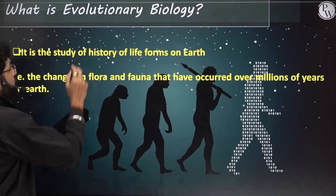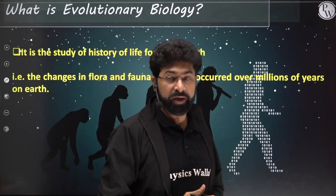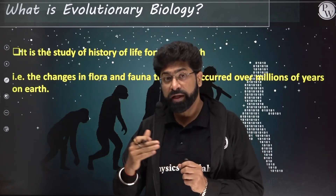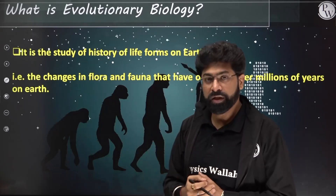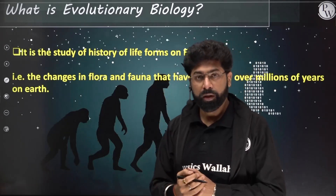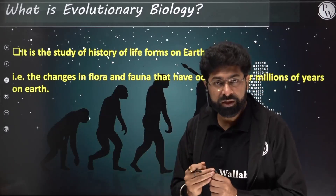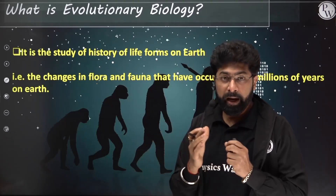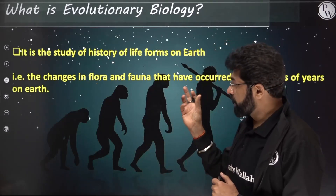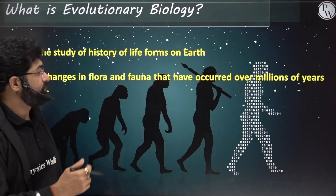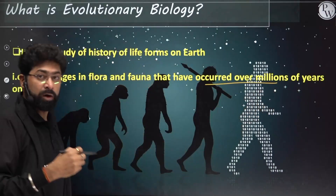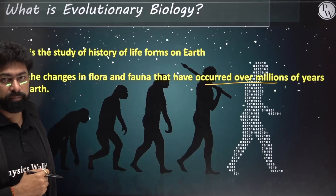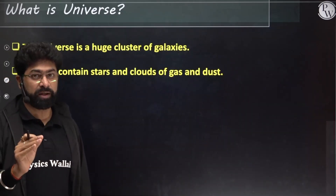What is evolutionary biology — is it different from evolution? When you study life forms on earth and their evolutionary history, that is called evolutionary biology. What do you study in that? It is the changes in flora and fauna — you study the evolution of both plants and animals — the evolutionary history of plants and animals which has happened over millions of years. That is what we study in evolutionary biology.